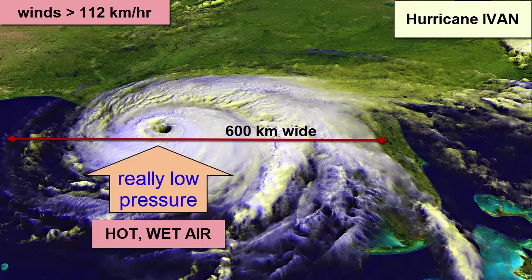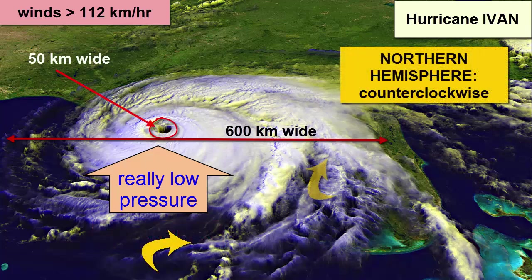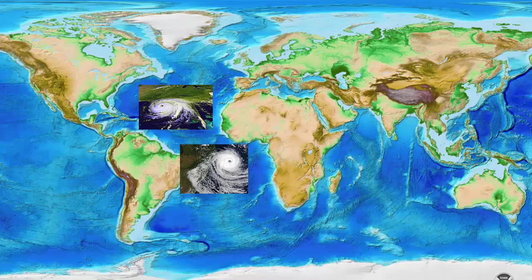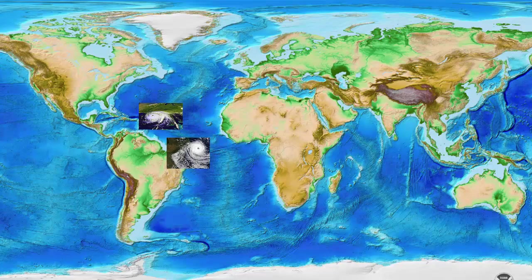Hurricanes can extend over 600 kilometers wide, with a center or eye about 50 kilometers wide. Because they are low pressure systems, they exhibit counterclockwise or cyclonic flow in the northern hemisphere. The motion is clockwise in the southern hemisphere, because the leftward deflection causes winds to be deflected to the left of the low pressure as they are sucked in. If these storm systems head toward the equator, the Coriolis effect weakens and the storm peters out.